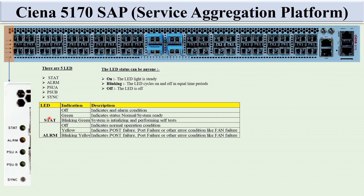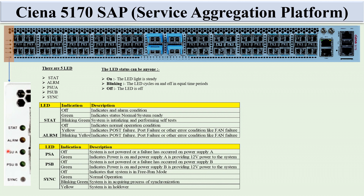The State LED has three indications. If it is off, it indicates an alarm condition. If it is green (steady), the system is in normal ready state. If it is blinking green, the system is initializing and performing self-test. The Alarm LED: if off, it means normal operation; if yellow, it indicates a POST failure, port failure, or other error condition such as fan failure; blinking yellow indicates the same types of errors.